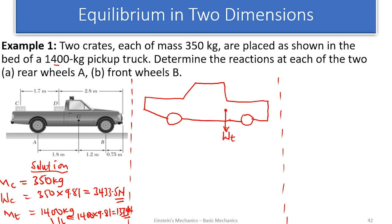We also have two crates — the first in box D and the second in box C — each with their weights acting downward. These are the weights of the crates. Now let's look at the reactions: the wheels are rolling on the ground, and a roller has an upward reaction force.